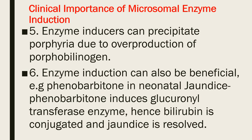Prolonged phenytoin therapy may produce osteomalacia due to enhancement of the metabolism of vitamin D3. Enzyme inducers can precipitate porphyria due to overproduction of porphobilinogen. Enzyme induction can also be beneficial — for example, phenobarbitone in neonatal jaundice. Phenobarbitone induces glucuronyl transferase enzyme, bilirubin is conjugated, and jaundice is resolved. It can be used for therapeutic purposes.